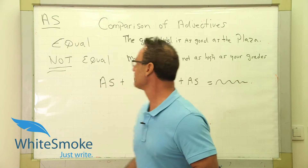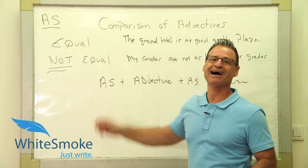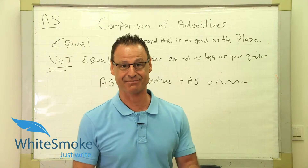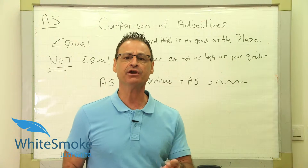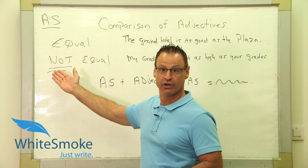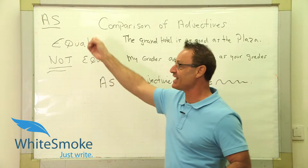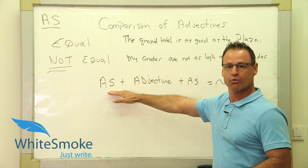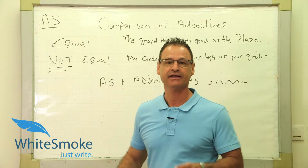Let's start with comparisons of adjectives — equal and not equal. Equal is a positive, like in mathematics: one plus one equals two, it's a positive. One minus one equals zero, it's a negative. And how do we know in English we have a negative? We use the word 'not' — those are your negatives. So we've got equal and we've got not equal. We've got 'as.' Something plus something will equal something.